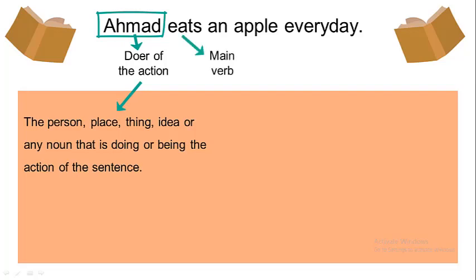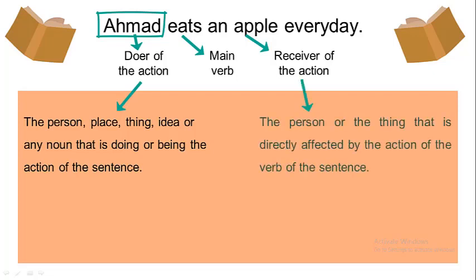Eats is the main verb, and an apple is the receiver of the action. Now, what do we mean by the receiver of the action? The receiver of the action is the person or the thing that is directly affected by the action of the verb of the sentence. So the verb of the sentence is eat — who is affected by the action of eating? The apple, which is the receiver of the action. Thus the action of eating falls on the apple. So, can you now conclude what a sentence is made of?